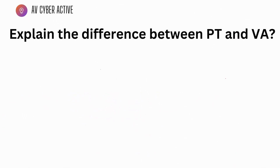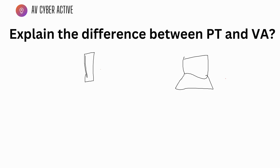The next question is the difference between PT and VA. PT stands for penetration testing and VA stands for vulnerability assessment. Let's start with vulnerability assessment using an example. Suppose we have a computer system and a server running a custom application meant to do a specific set of jobs. The server runs a piece of software that performs a series of tests on this machine.